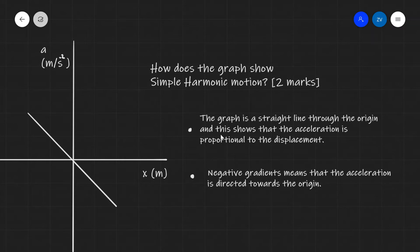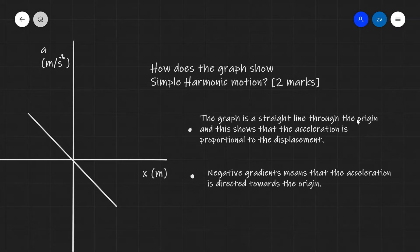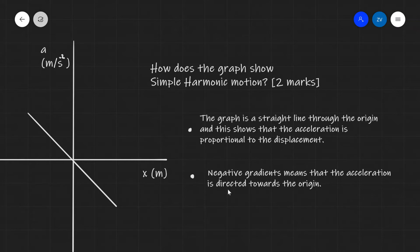For example, if we just wrote 'the graph is a straight line through the origin,' this would not get us full marks. We have to explain that because the graph is a straight line through the origin, this shows that the acceleration is proportional to the displacement, and that the negative gradient means the acceleration is directed towards the origin.